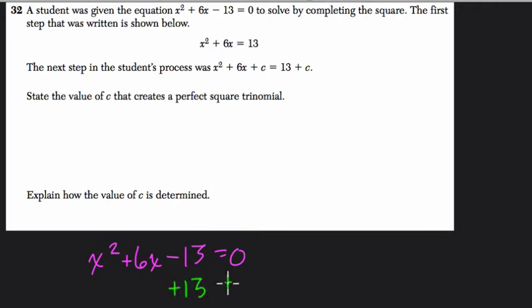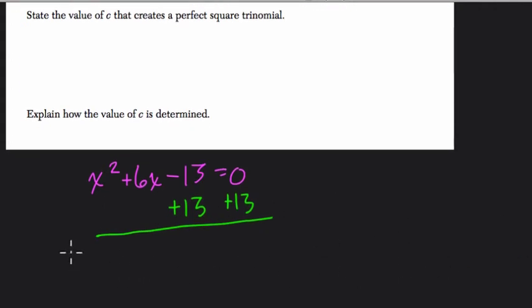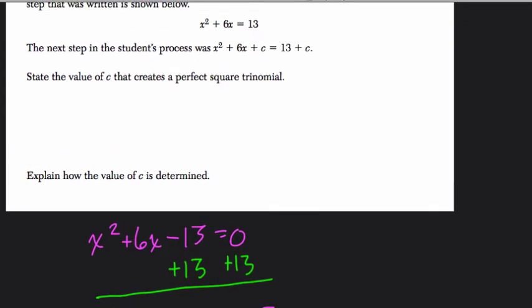I know they're not asking this, but I like to think about these questions as we go. So here I know what's been done so far. I know that they've added 13 to both sides. So this gives us x squared plus 6x equals 13. So what are they going to ask us now? Let's see.